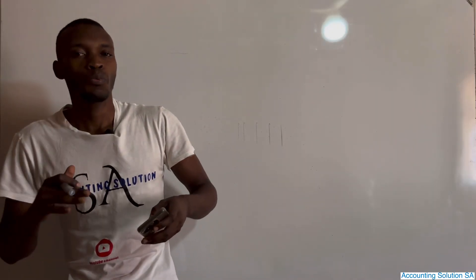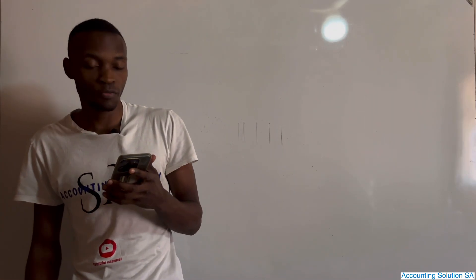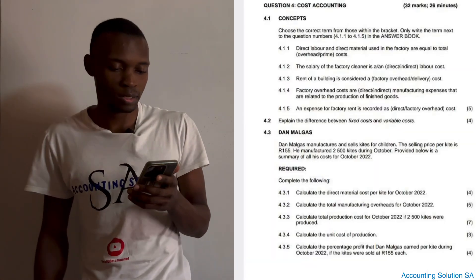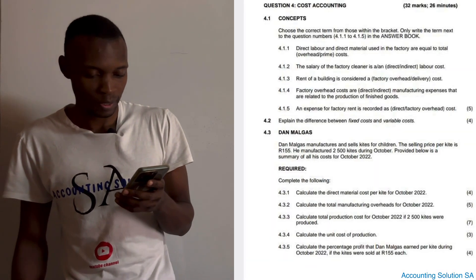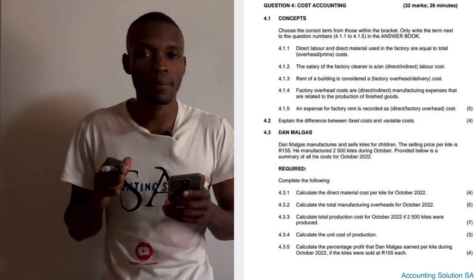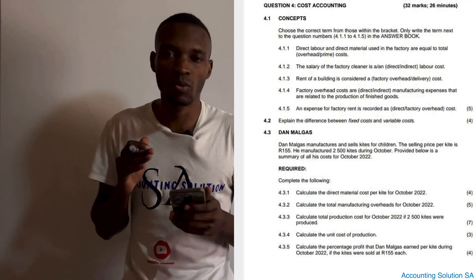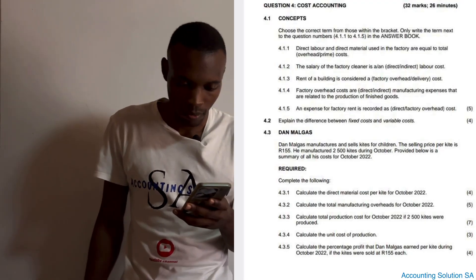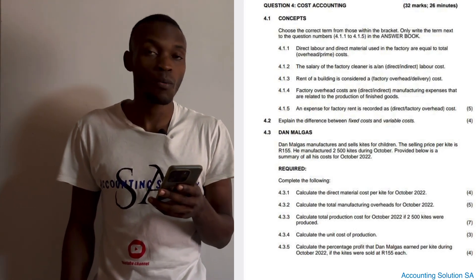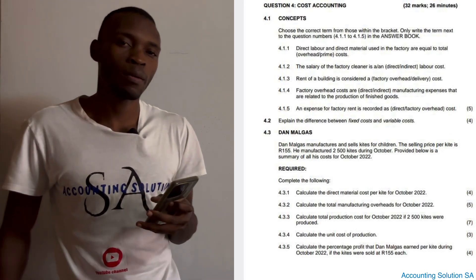In this video we are going to do one of the chapters of Grade 10. The chapter is called accounting, or we call it manufacturing. The question paper we have is going to be part of Paper 2 of the final examination that you're going to write. Before we start with our question, let me give you a background of what cost accounting is all about.